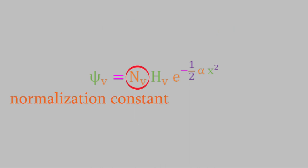And Nv is a normalization constant. You might remember from video 3 that the probability that the system has a location somewhere in space must be equal to 1, and the normalization constant is a constant we include in the equation of the wave function in order to make sure that happens. In this case, the normalization constant is 1 over the square root of 2 raised to the v power, multiplied by v factorial, and all times alpha over pi to the 1 fourth power.